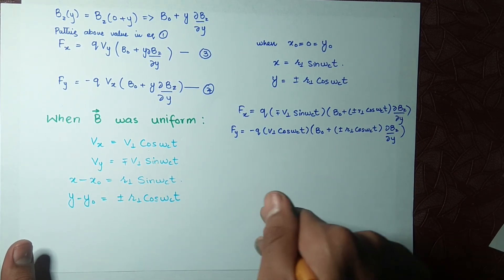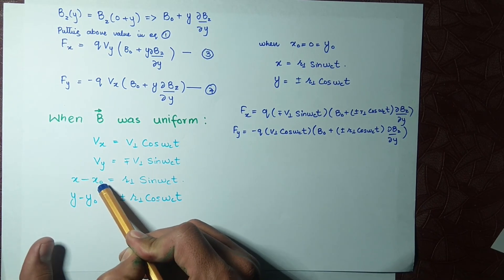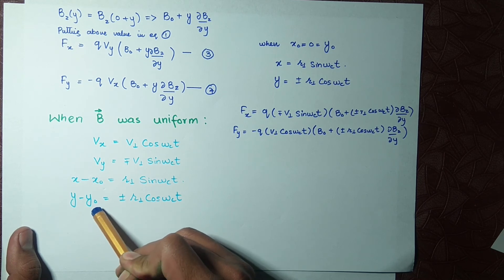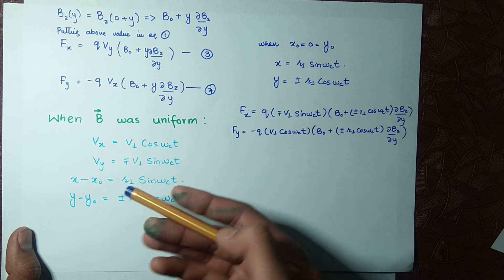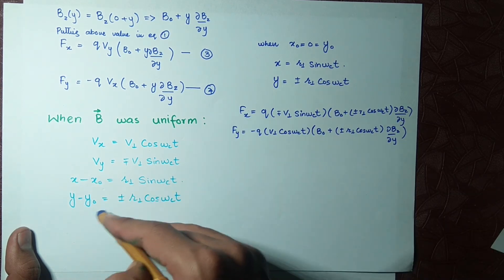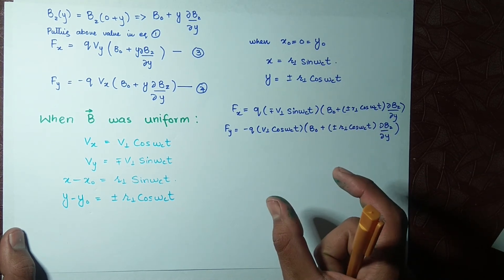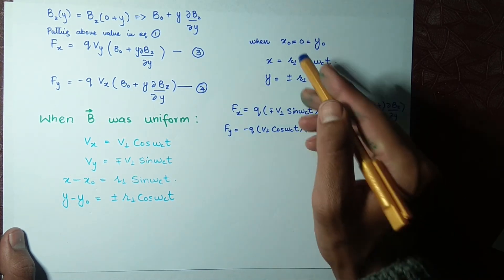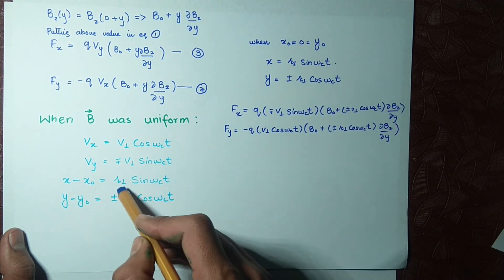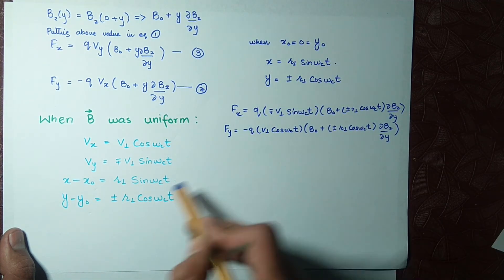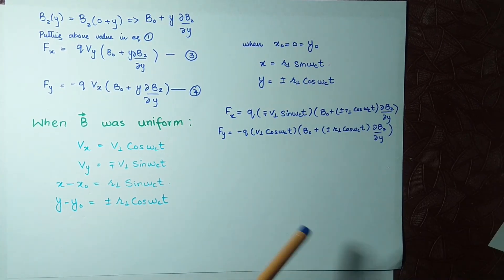Since x0 and y0 are arbitrary starting points, we take them as zero — our starting point is zero. So x0 = 0 and y0 = 0. This gives us x = r⊥ sin(ωct) and y = ±r⊥ cos(ωct).